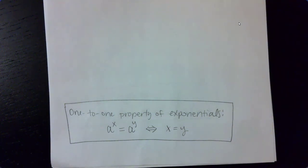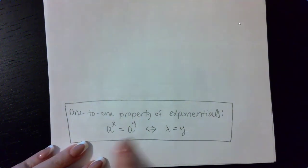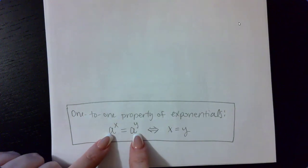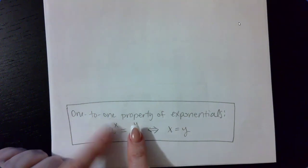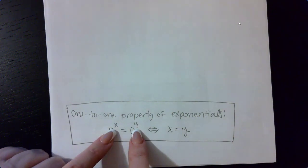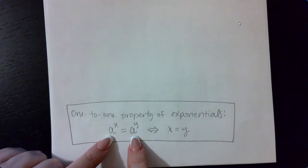The one-to-one property of exponentials states that if you have two exponential expressions in an equation, if this base matches this base, then the only way that the left side can be equivalent to the right side is if the exponents are also the same. Our goal is to try to get our expressions on both sides of the equation to have the same base.